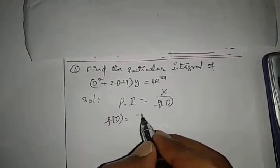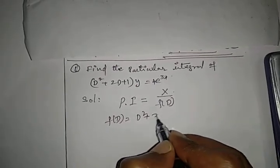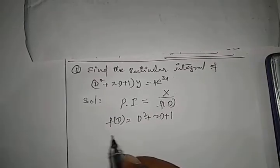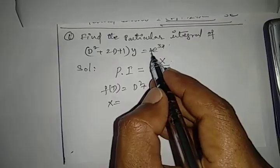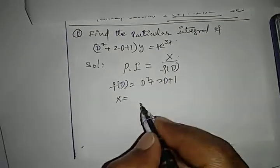f(D) is the LHS value: D² + 2D + 1. And x is the RHS value: 4e^(3x).